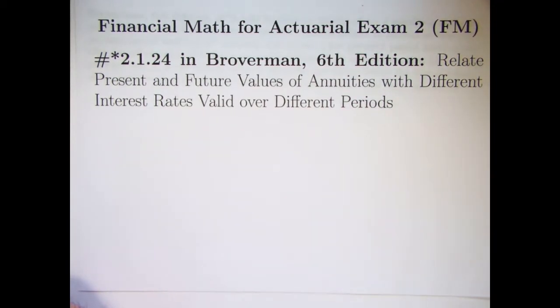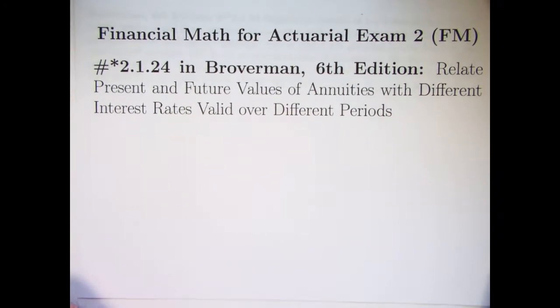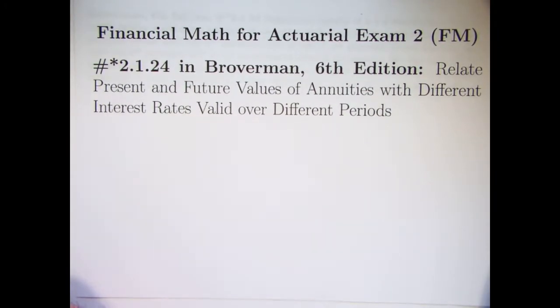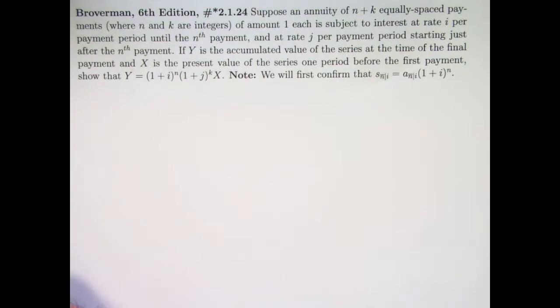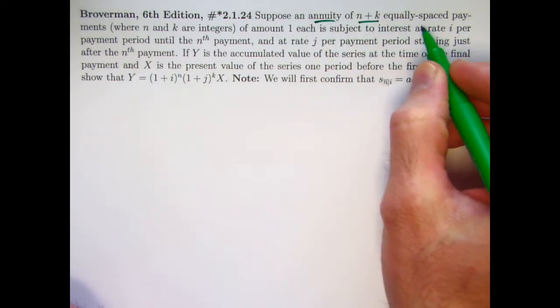It's about relating present and future values of annuities with different interest rates that are valid over different periods. It's kind of a learned problem statement.